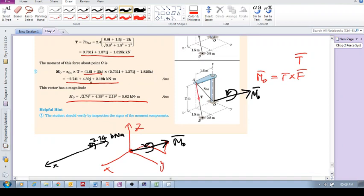About the y-axis, because it's plus, point your thumb in the positive y direction and your fingers will curl like that. The magnitude of that moment is 4.39.